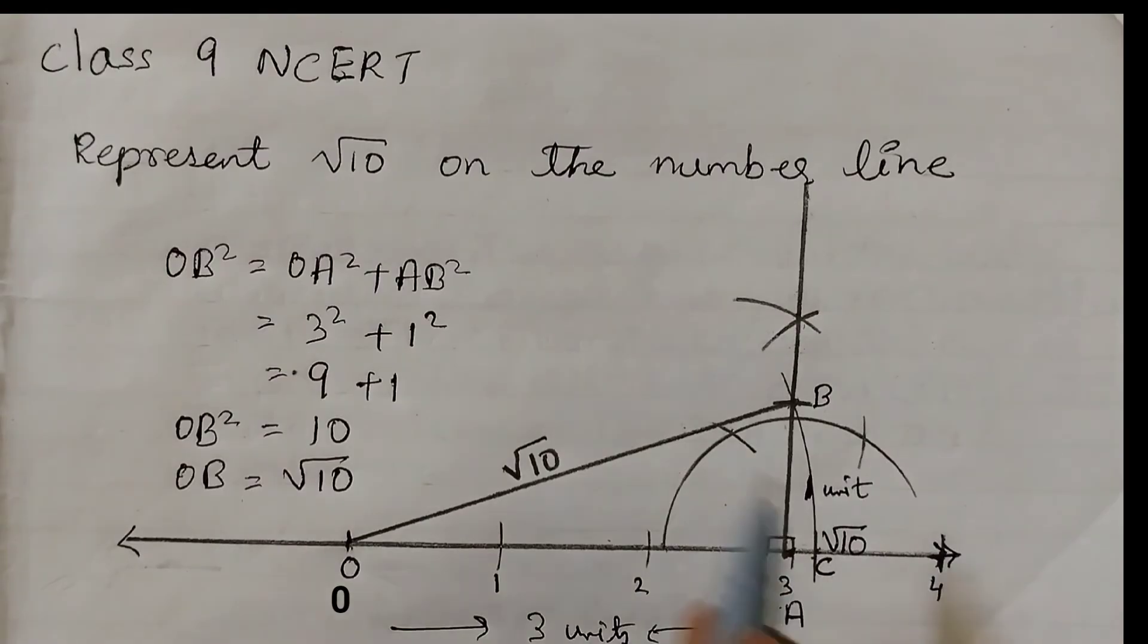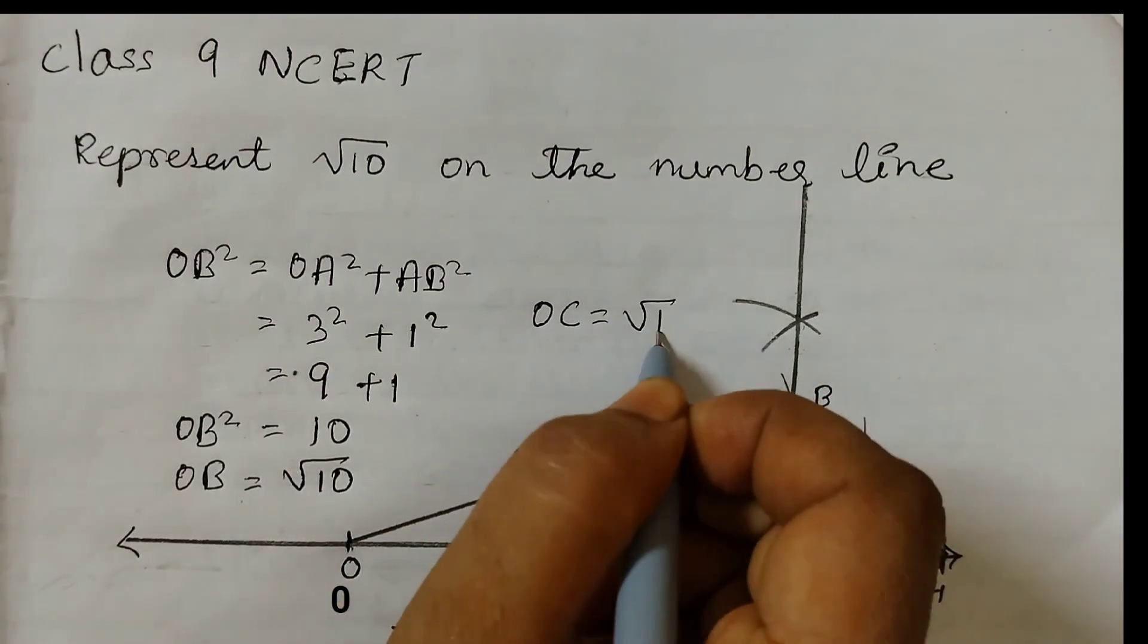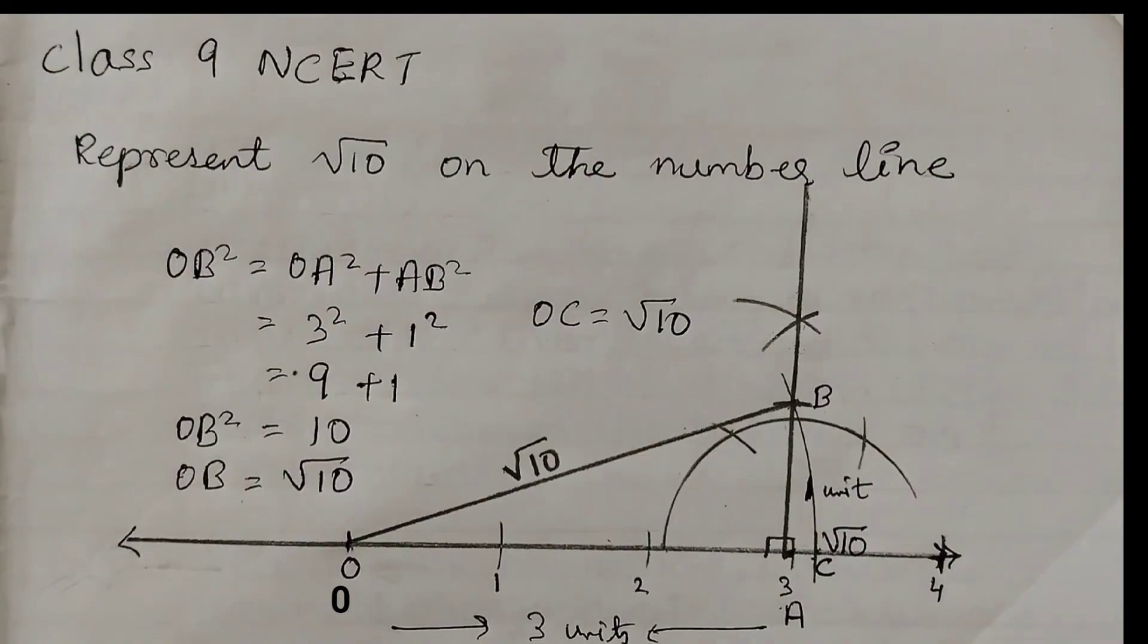This distance from O to C, OC is also equal to square root of 10. I hope this is clear to all. Thank you.